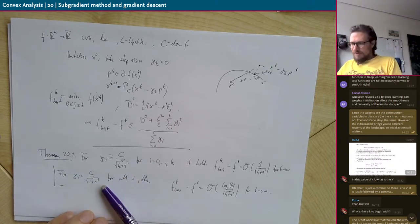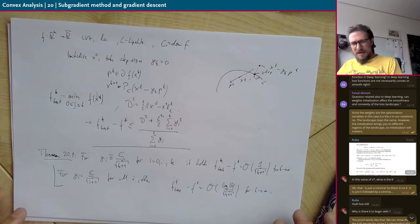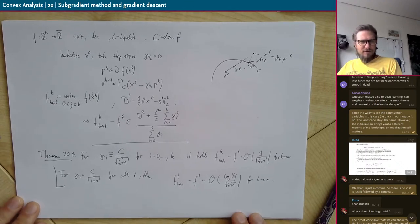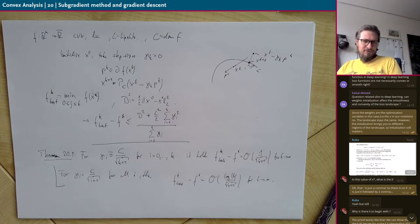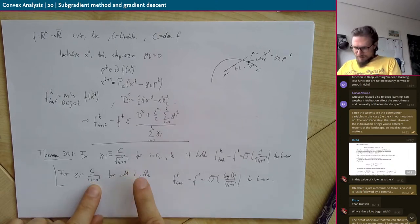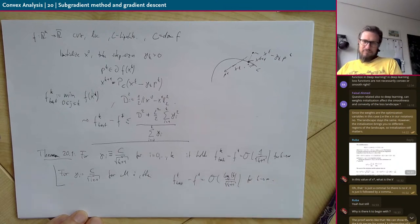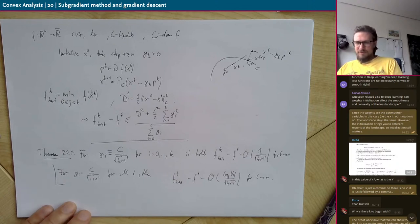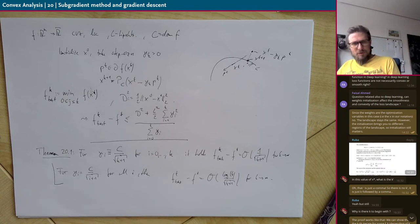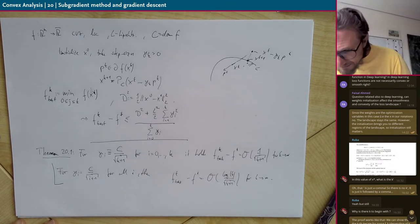In practice, if you need to use the subgradient method because nothing else is available, the problem is non-smooth and you don't know anything else, then tuning the step sizes is probably the most important part. These two options are not bad, but in practice many things are better. You can work with a constant step size for a longer time and then reduce it. If you don't reduce the step size, you will never converge in general, because the gradients don't go to zero near the minimum due to non-smoothness.